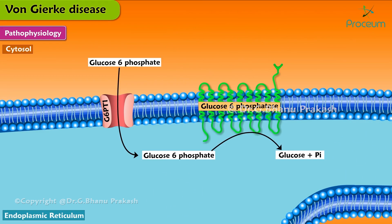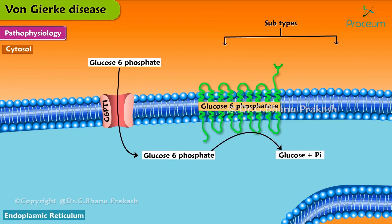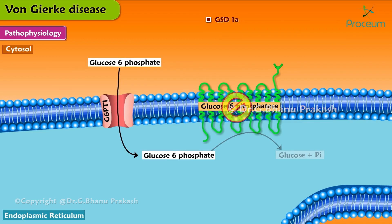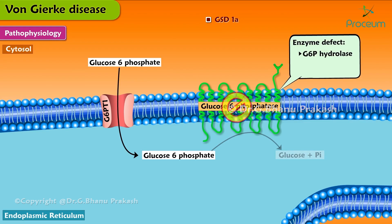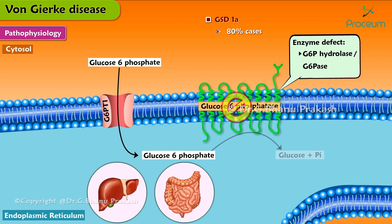GSD1 is caused by defects in the phosphatase or translocase. Based on this, there are two key subtypes: GSD1A and GSD1B. GSD1A is due to a deficiency in the enzyme G6P-hydrolase, or glucose 6-phosphatase, also abbreviated G6Pase. It comprises over 80% of cases of GSD1. G6Pase is expressed in the liver, intestine, and kidney.